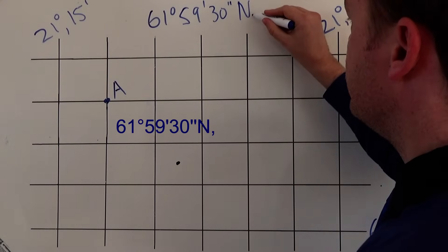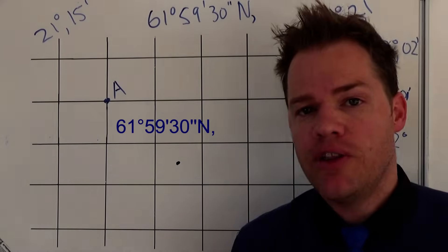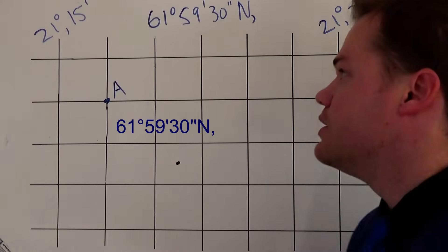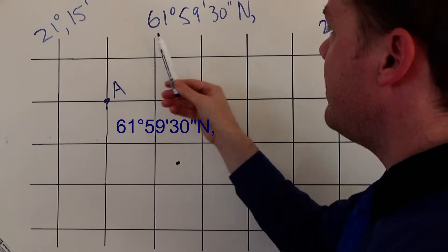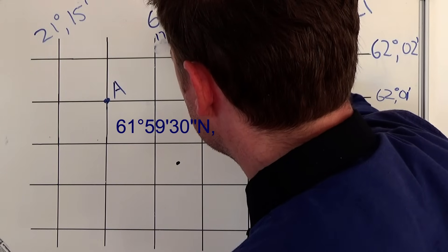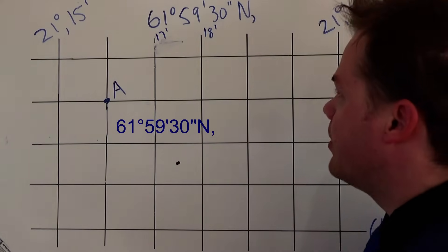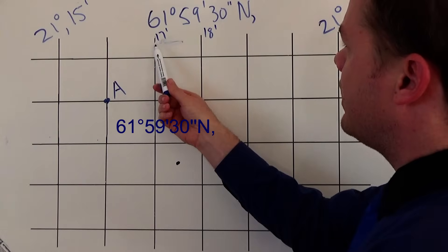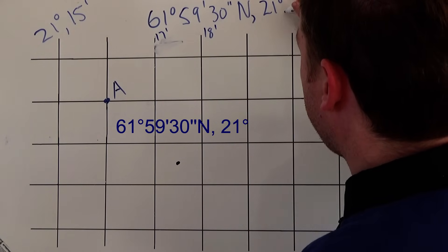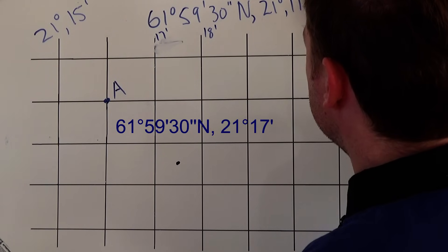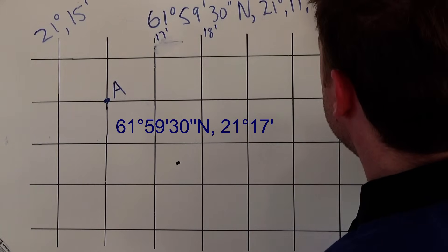Now we want to determine the longitude. Always remember: follow the steps and use what you've got. We have 21 degrees 15 minutes, so then 16 minutes, 21 degrees 17 minutes, then 18 minutes. Point B sits halfway between 17 and 18 minutes, so we write 21 degrees 17 minutes, and because it's halfway in between, that's 30 seconds. So the longitude is 21 degrees 17 minutes 30 seconds east.